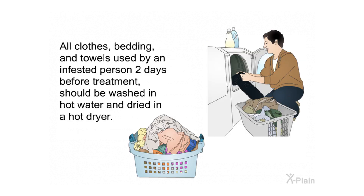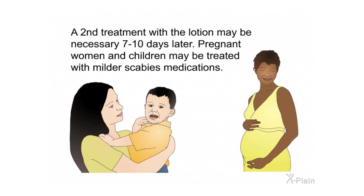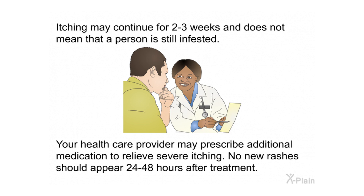All clothes, bedding, and towels used by an infested person in the two days before treatment should be washed in hot water and dried in a hot dryer. A second treatment with the lotion may be necessary seven to ten days later. Pregnant women and children may be treated with milder scabies medications. Itching may continue for two to three weeks and does not mean that a person is still infested. No new rashes should appear 24 to 48 hours after treatment.